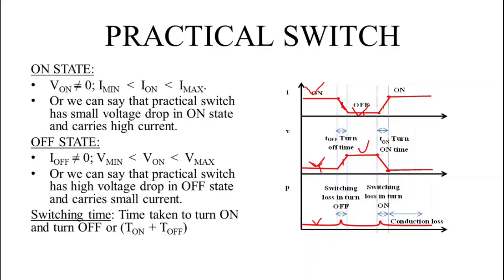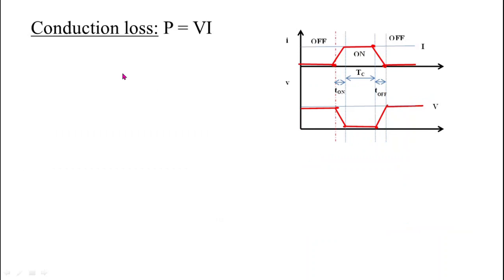Similarly, during the turn-on transition, both current and voltage are considerable, so switching losses are considerable. Now we will see the procedure to find the losses. Conduction losses equals voltage into current.